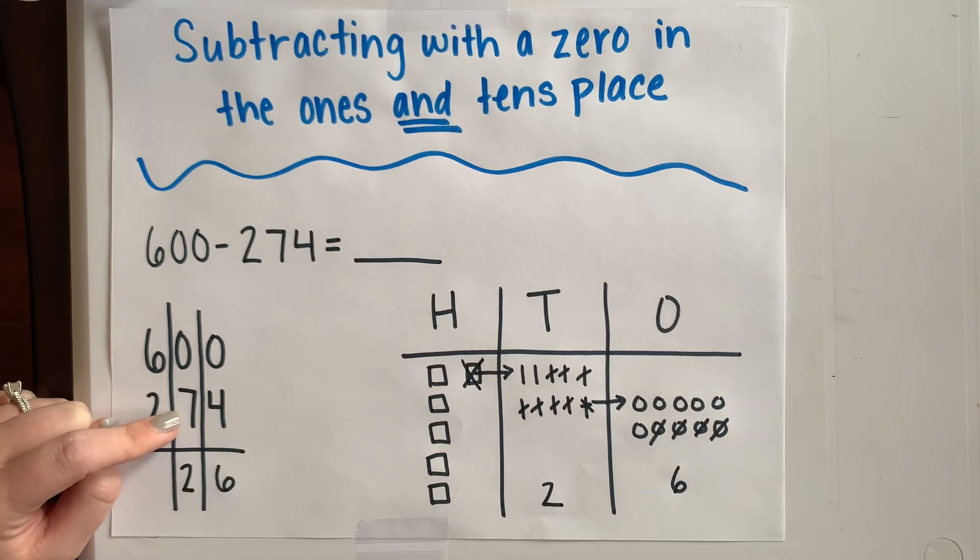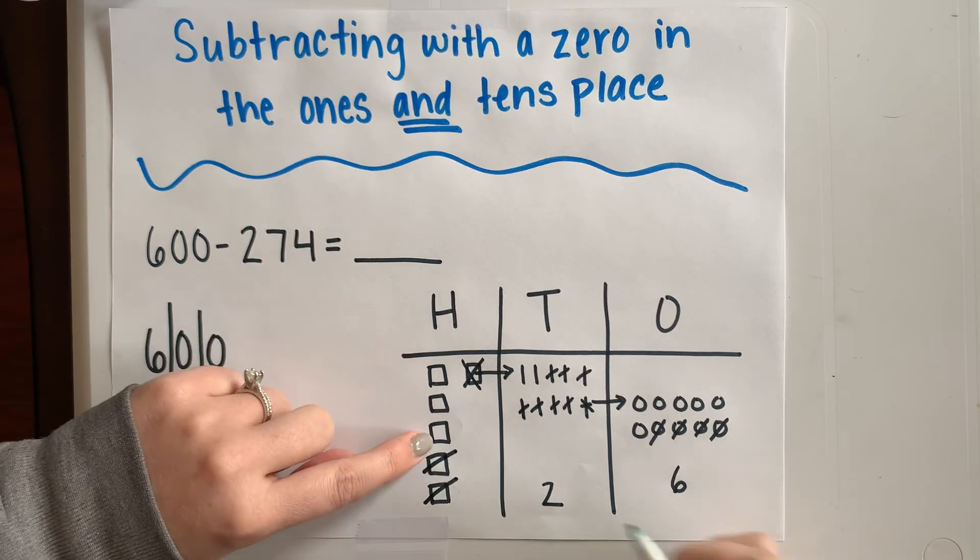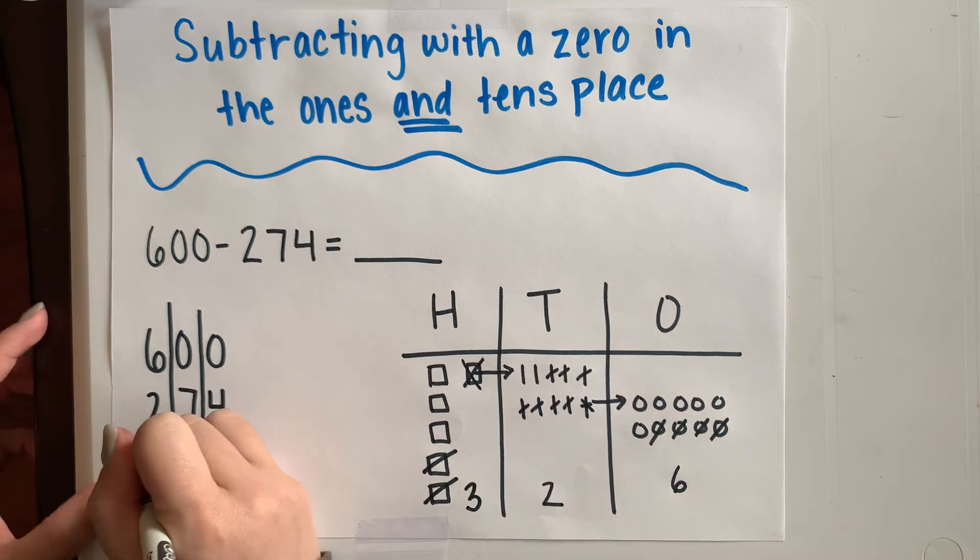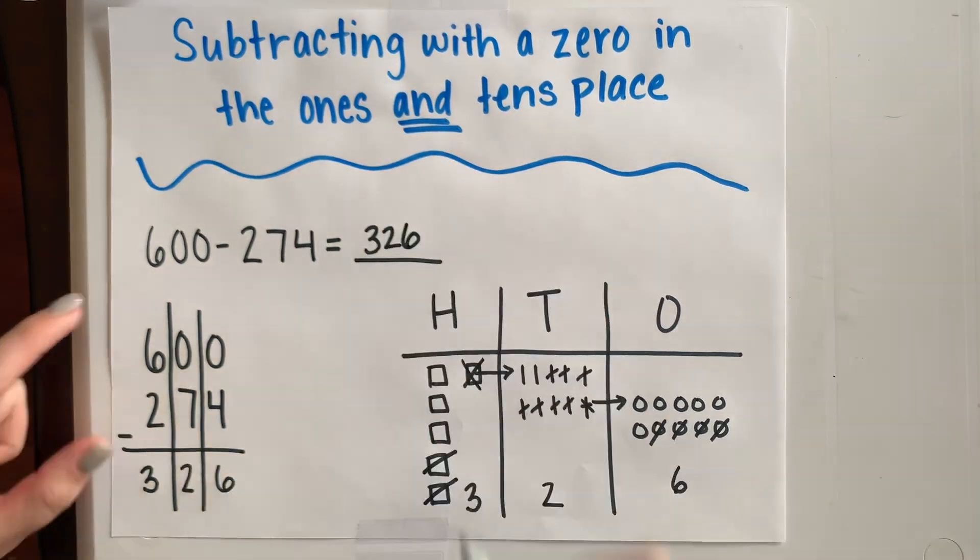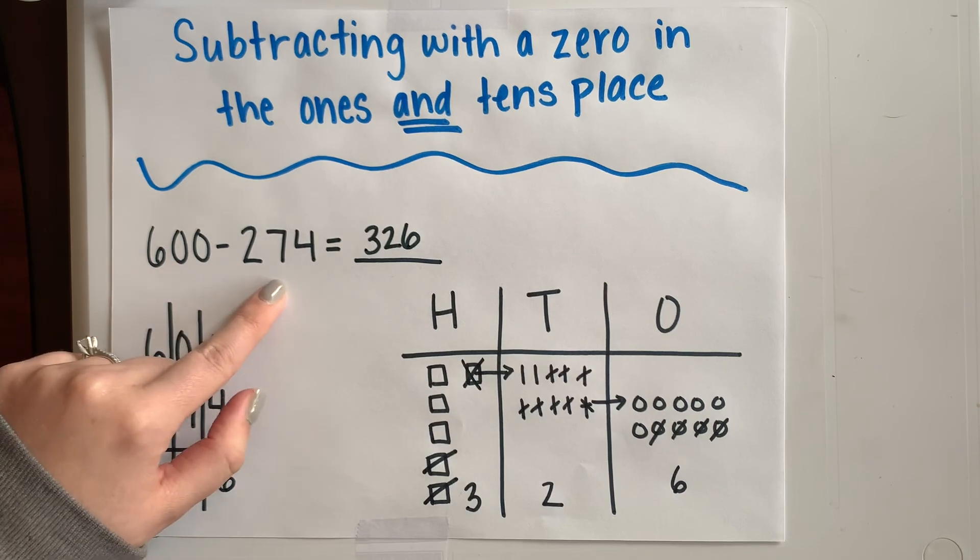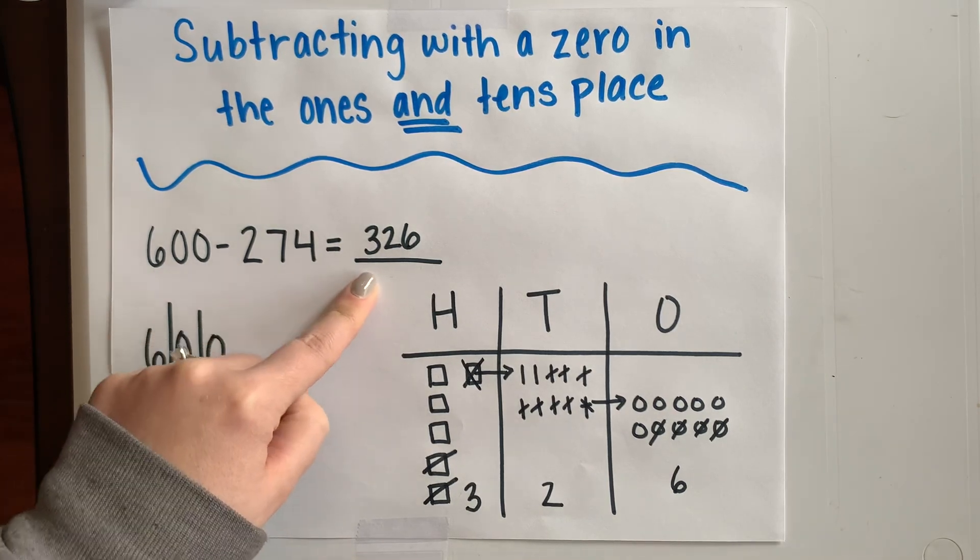And last but not least, I need to take away two hundreds. One, two. I'm left with one, two, three for my hundreds place, which means that 600 minus 274 equals 326.